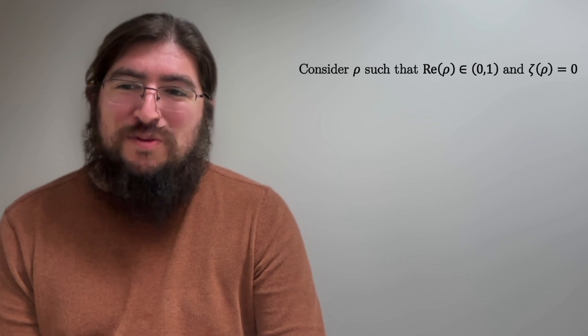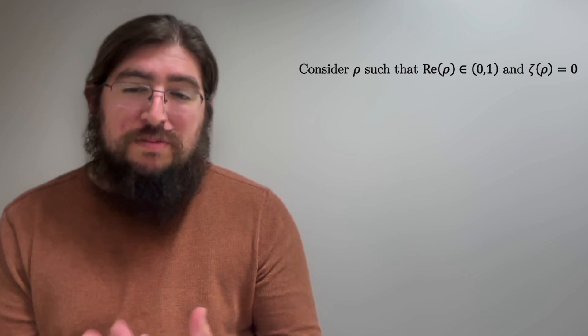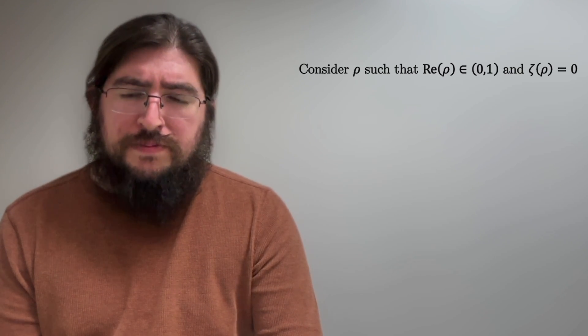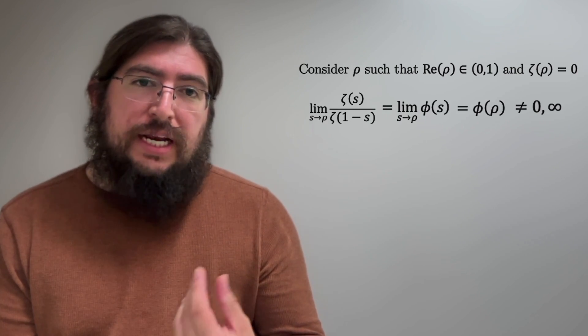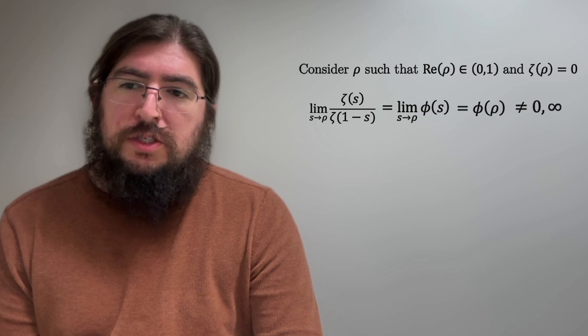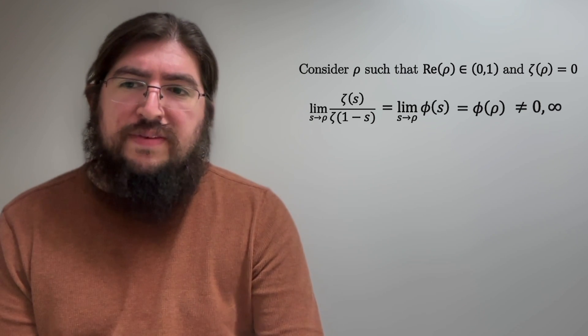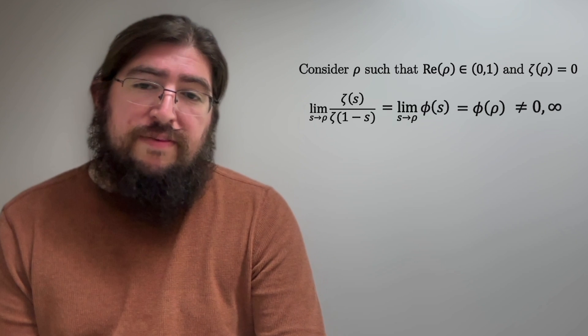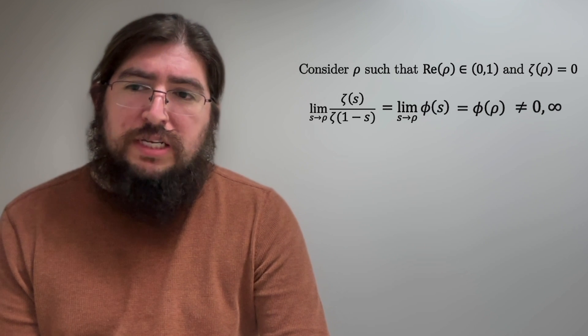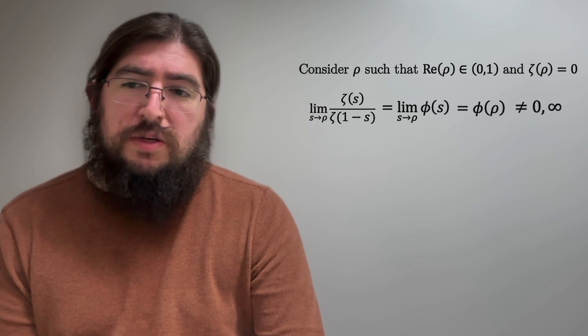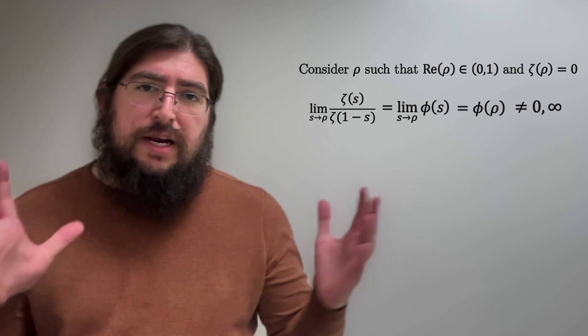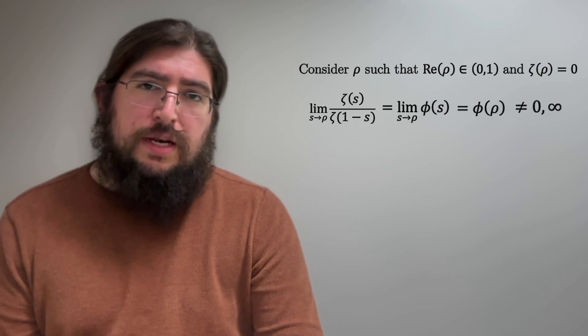Now, finally, we're going to let rho be such a zero, so its real part is between 0 and 1, and it satisfies zeta of rho being equal to 0. And then, to be in the case of this limit, zeta over zeta of 1 minus s, of course, it's equal to the limit of phi, if you just divide in the previous equation we had. And phi of rho, believe it or not, is never 0 or infinity. That can be easily shown. The only time each of those pieces that make up phi is equal to 0 is for a value outside of the critical strip, meaning it's outside of the real part of the complex input being in between 0 and 1.